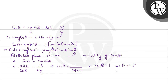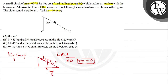The frictional force, as we already saw in the diagram, is directed towards Q. So our final answer is theta should be greater than 45 degrees and the force acts on the block should be towards Q. So the final answer is option C. I hope you understood it well and best of luck.